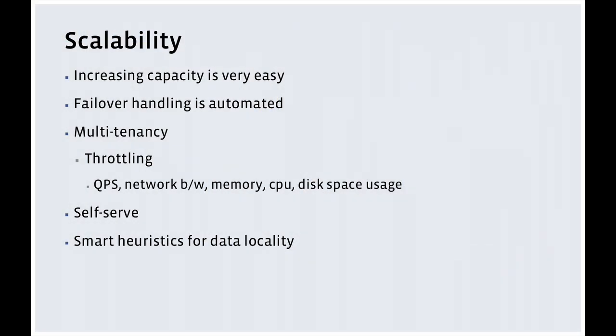Smart heuristics for data locality: as Facebook keeps adding more data centers, it's critical to scale efficiently while maintaining fast read and write latencies for user data. Traditionally the approach has been to clone data sets into new data centers, but that doesn't scale. We did something on a one-off basis that we're looking to generalize: at a sub-dataset level, we move the Paxos quorum for that data set closer to the entity operating on it. For example, for a user data set, move the Paxos quorum to the closest data center to the user. As the user migrates, keep migrating this quorum. You still have 3x copies and get super-fast read and write latencies.